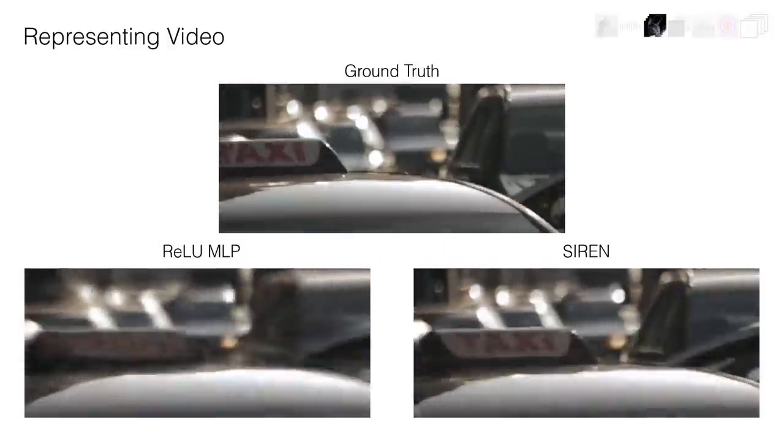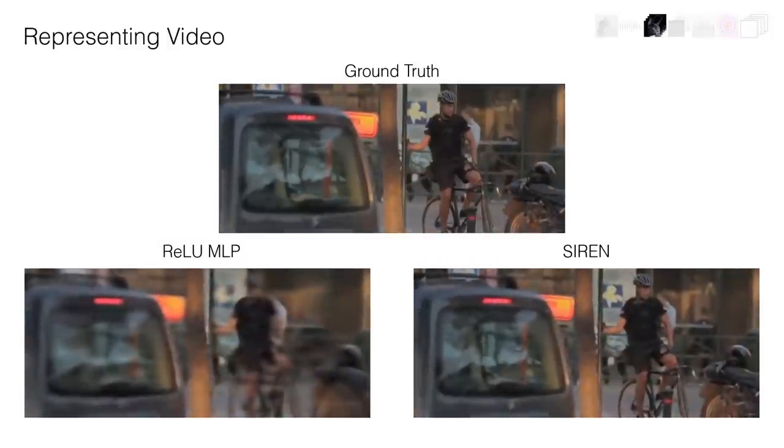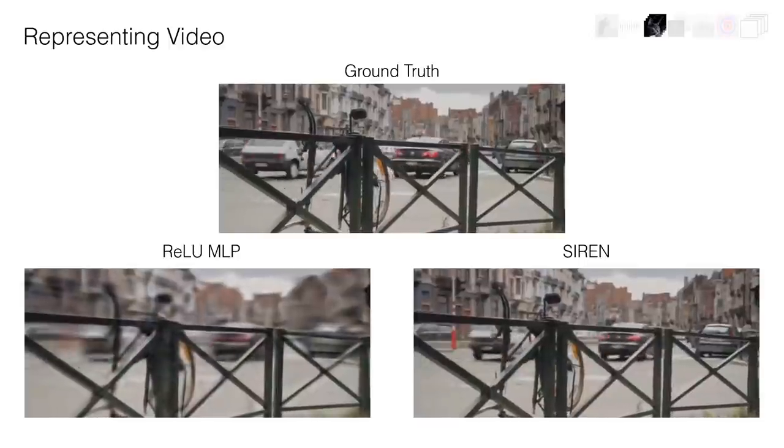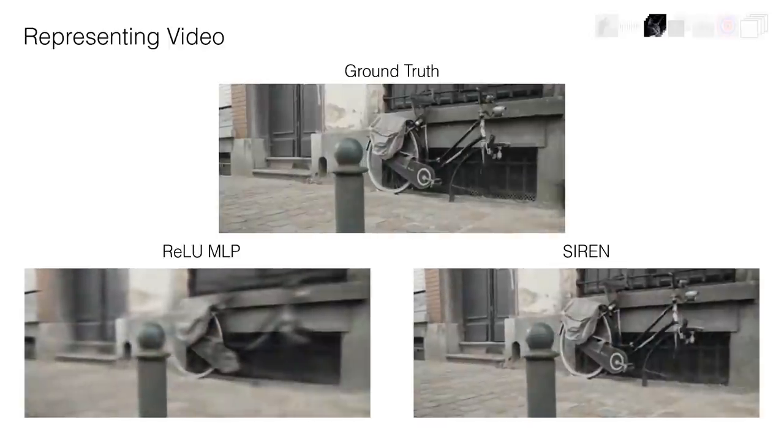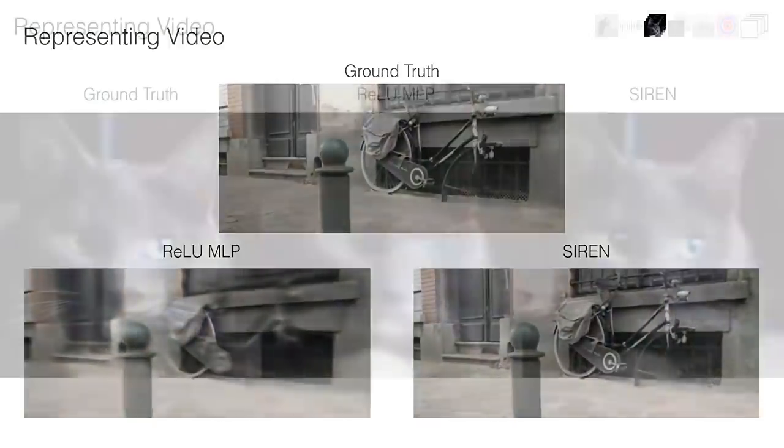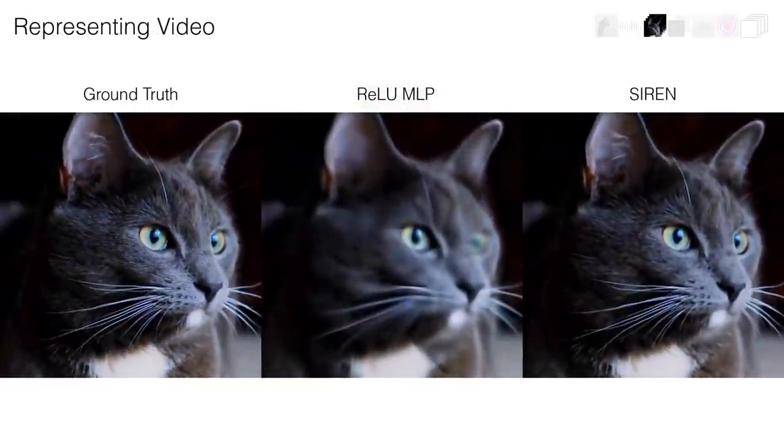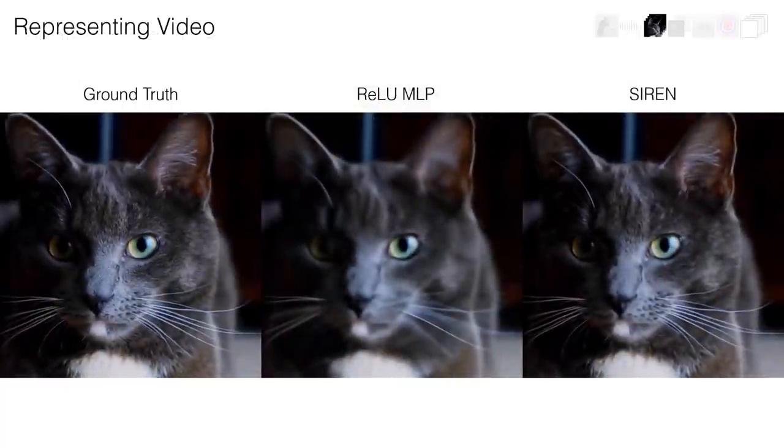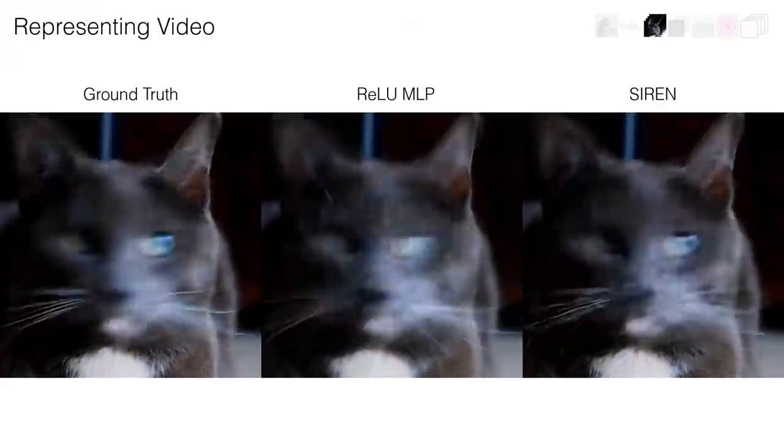SIREN fits fine details significantly more accurately than a conventional MLP with RELUs. Note the video is complex, with different scenes with little self-similarity. However, even on a video that exhibits a lot of self-similarity across time, SIREN fits the spatiotemporal signal much more accurately.